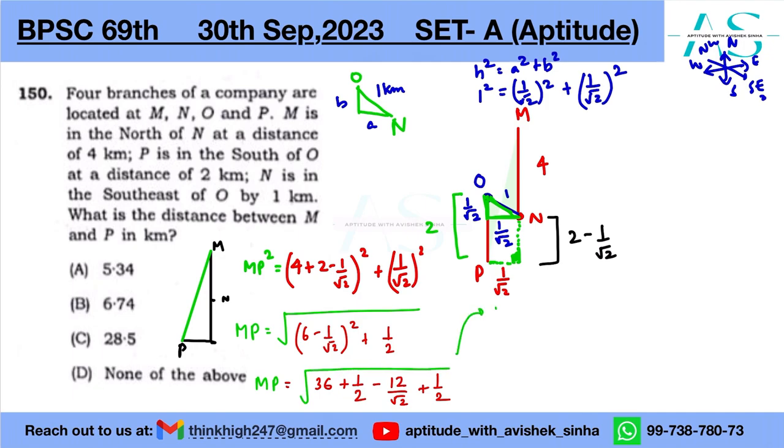This is the whole value of MP which I have to find out. Let's solve it here. MP is equal to root under, now we have 36, one by two is one, 37 minus 12 by root two.